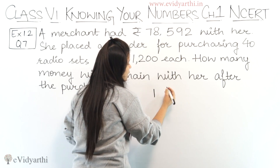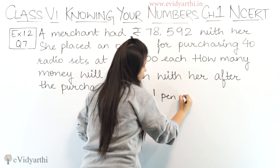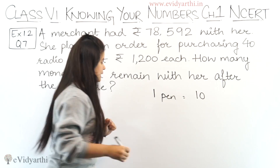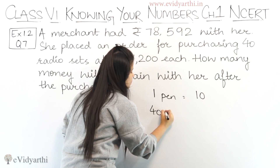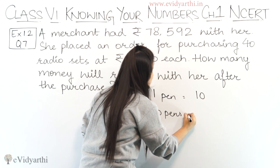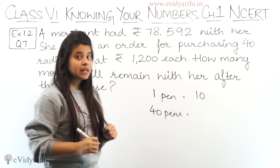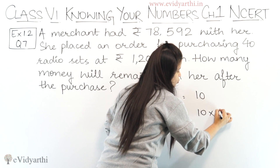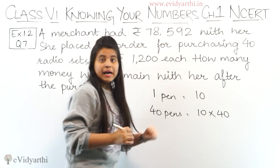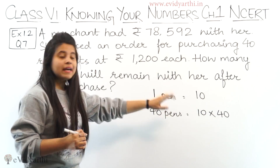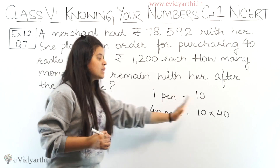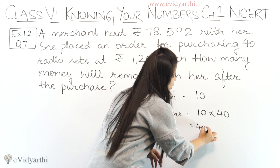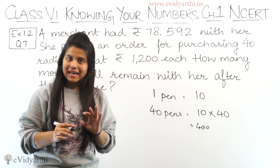Here I am going to tell you that 1 bill is Rs. 10. And if I order 40 pens, then my 40 pens will be Rs. 10 into 40. So this will be Rs. 400. Understand?